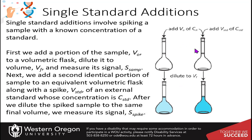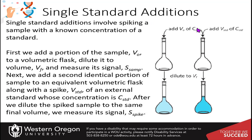With a single standard addition, you have your analyte at some concentration and you add a small volume — called V-naught, the initial volume — into a volumetric flask, then dilute that sample to the mark. Whatever that final volume is will be V-F. To a second flask, you add the same amount of your analyte plus a known volume of a standard at a known concentration of that standard.